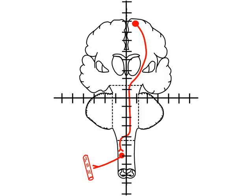We know that the upper motor neuron starts on one side, on the cerebral hemispheres, descends to the level of the lower medulla, crosses over, and then continues its descent.